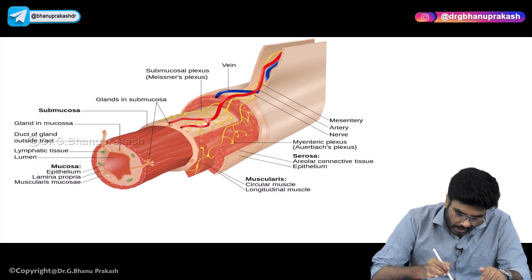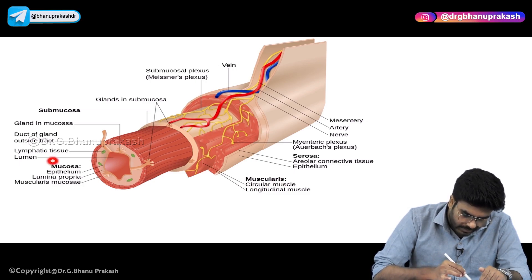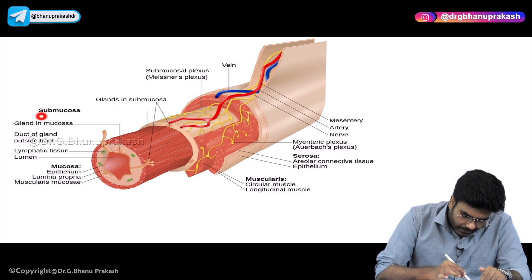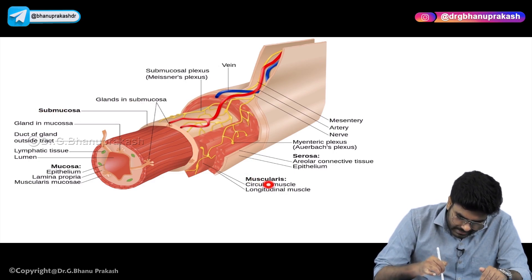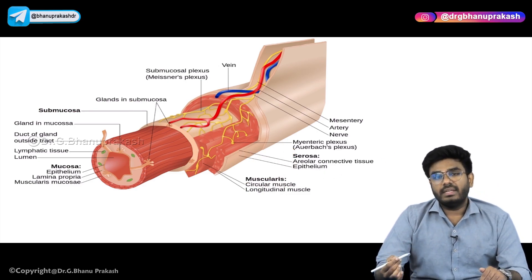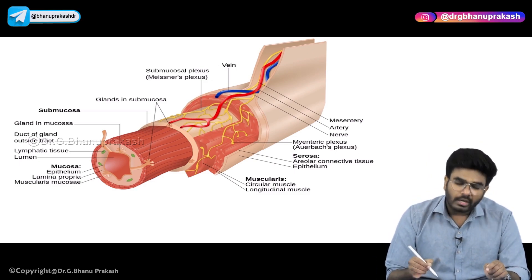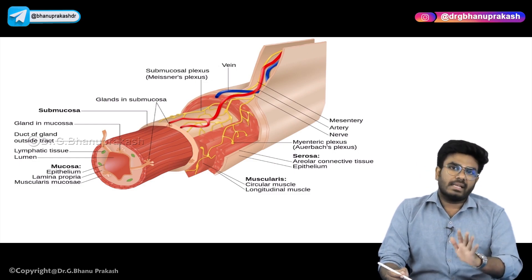After submucosa, there is the muscular layer called muscularis. So the layers are: innermost is mucosa, then submucosa, then muscularis. The last layer is the outermost covering called serosa — a connective tissue covering all the mucosa, submucosa, and muscularis.